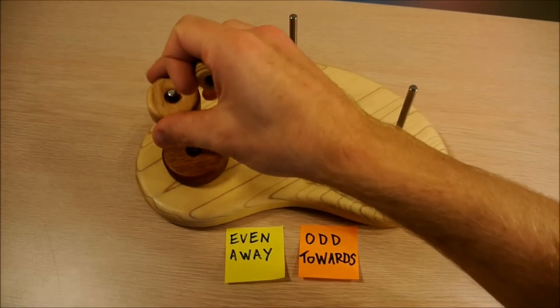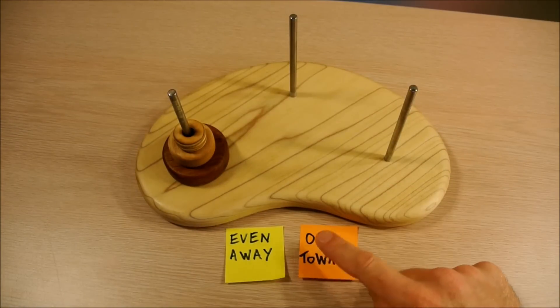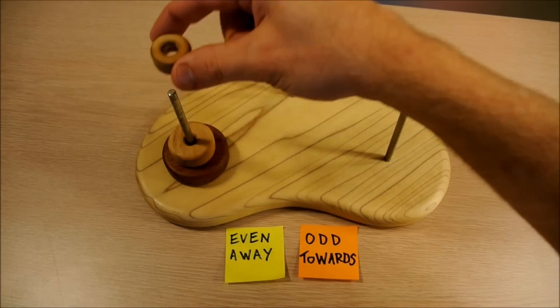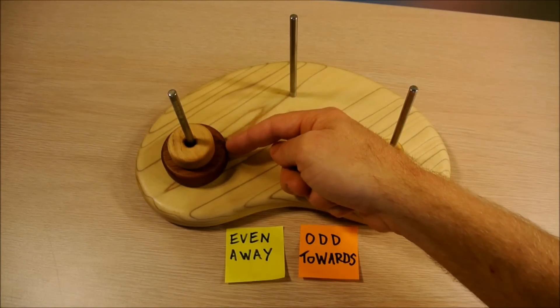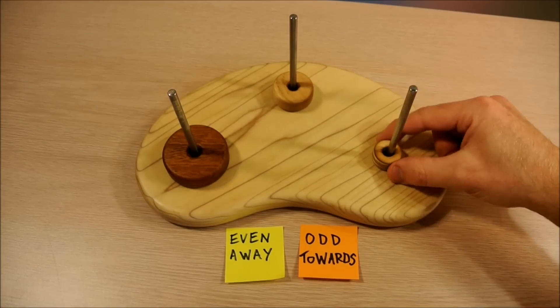Next case. Three, which is an odd number, so our opening move is towards the goal. The remaining two are even, we move away from the goal.